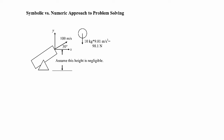Let's work it out first with numerical values. We have our cannon and we're going to shoot the cannonball at 100 meters per second at an angle of 30 degrees with respect to the horizontal. We'll put our coordinate system at the launch point, x and y. The cannonball has a mass of 10 kilograms, and we have gravitational acceleration acting on it.